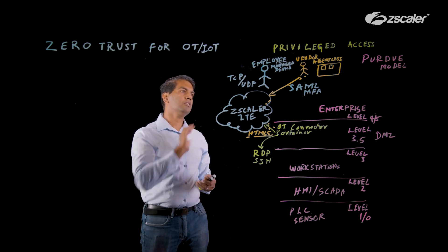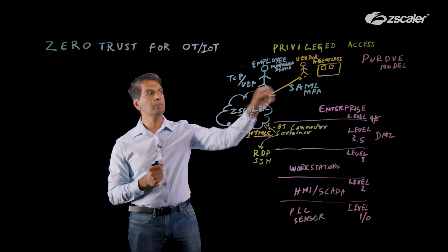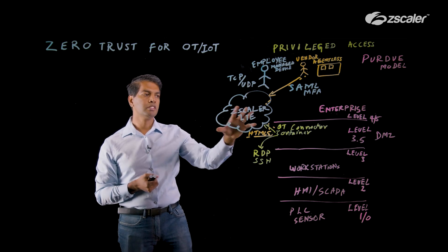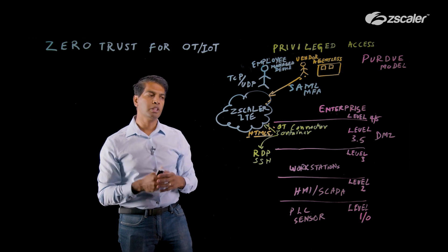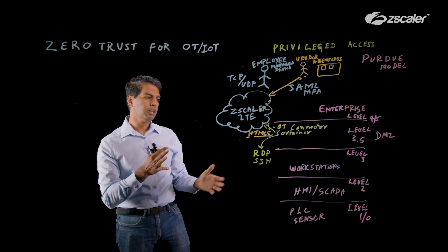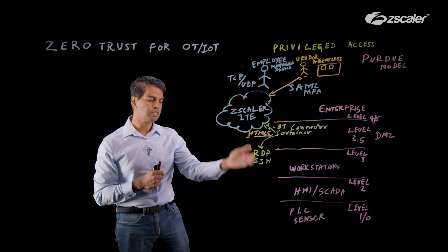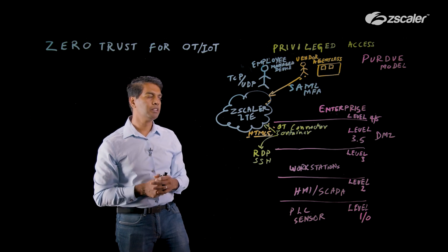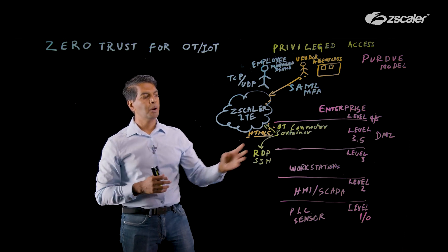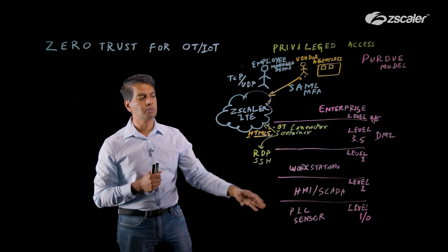When you think about this deployment scenario, this is the only thing you need to deploy. You probably already have SAML. There's nothing to deploy from a vendor perspective. Your employees already have the Zscaler client connector, so all of this goes to the same single platform — whether it's OT or IT access — and that's where the significant benefit comes from. This works really well with the Purdue model. You don't have to abandon it; many concepts of the Purdue model are still very relevant. Whatever the Purdue model was addressing as an on-prem solution, we're doing that and more in a zero-trust environment for much better security.